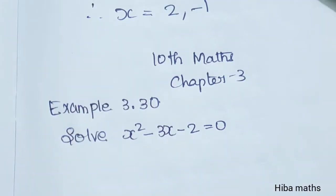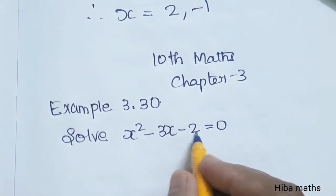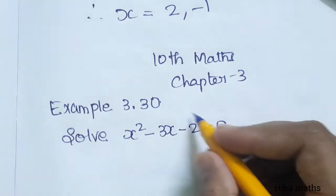Hello students, welcome to Hiba Maths 10th Standard Maths Chapter 3 Example 3.30. Solve x² - 3x - 2 = 0. In this example,